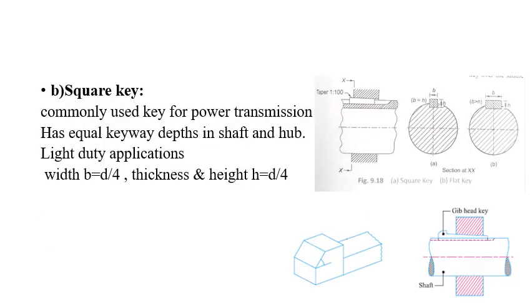We will see the square key. The square key is also a sunk key commonly used for power transmission. It has equal keyway depth in shaft and hub for light duty applications. Width is b=d/4, and thickness and height is h=d/4.